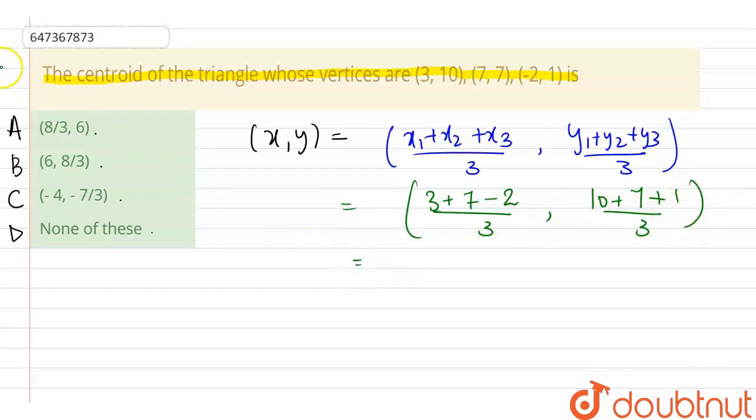Solving this: (3 + 7 - 2)/3 = 8/3, and (10 + 7 + 1)/3 = 18/3 = 6. So the coordinates of the centroid are (8/3, 6). This is option A. Therefore, A is the correct answer.